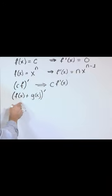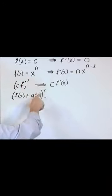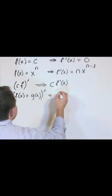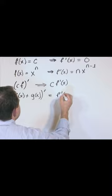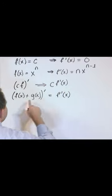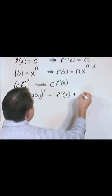Two different functions, no matter what — to take the derivative of the sum of two or more different functions, you just simply take the derivative of the individual functions and add them together.